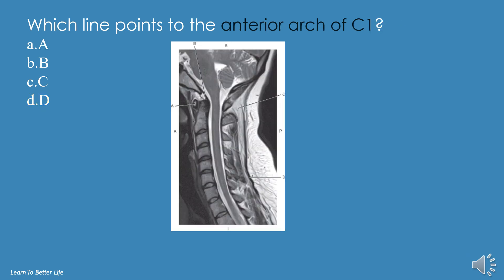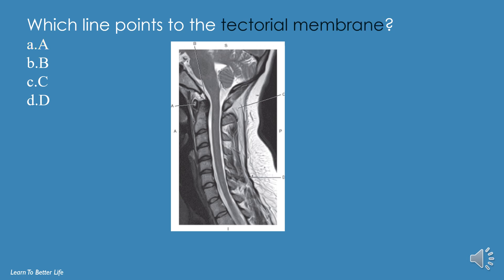Which line points to the anterior arch of C1? A, B, C, or D? The answer is A. Which line points to the tectorial membrane? A, B, C, or D? The answer is B.